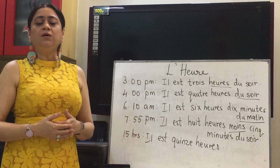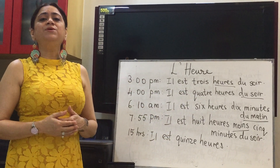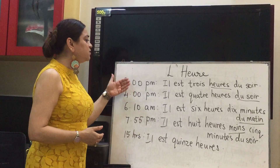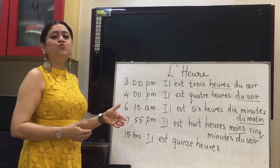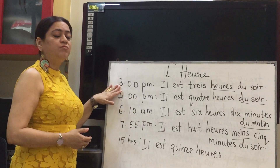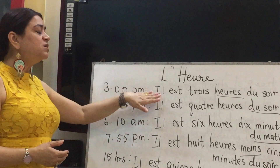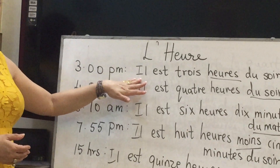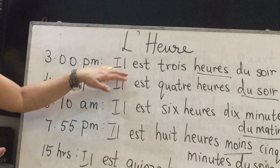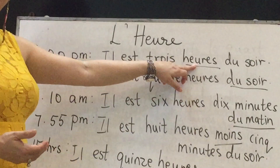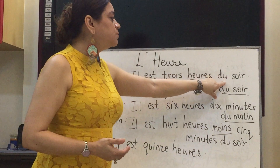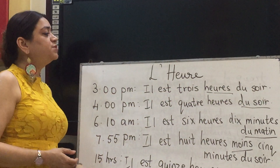P.M. is known as 'du soir' and A.M. is known as 'du matin.' Let's put up a few timings and go through them together. Say three o'clock, 3 P.M. — you say 'il est trois heures du soir,' meaning it is three hours, so it is 3 P.M.